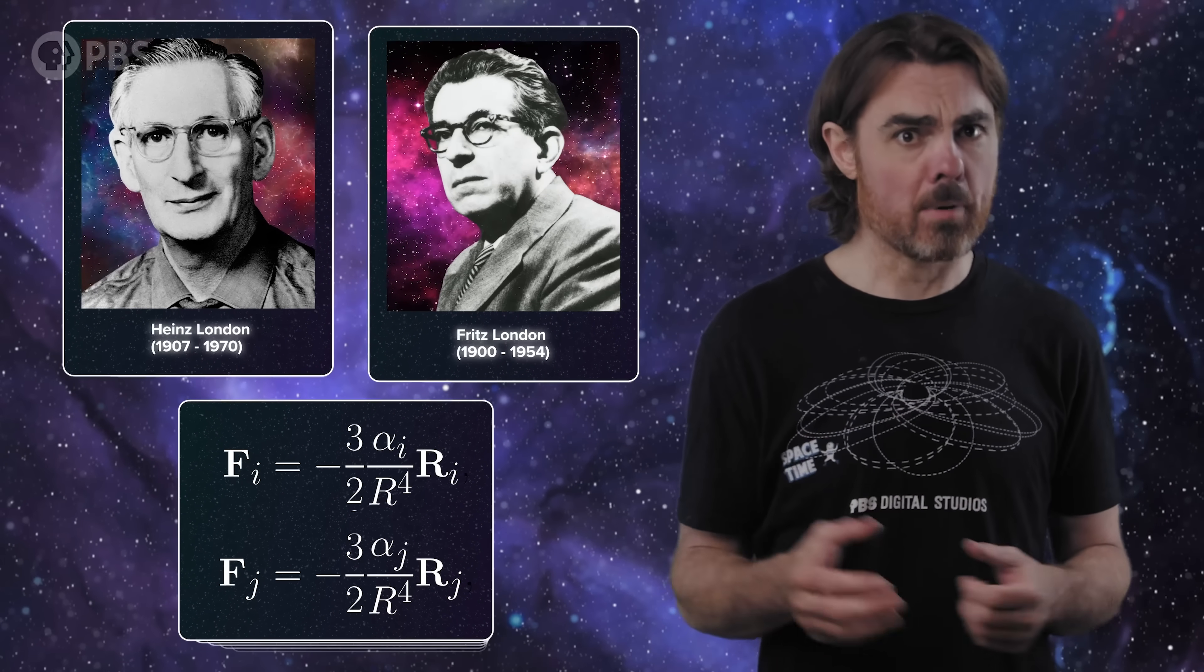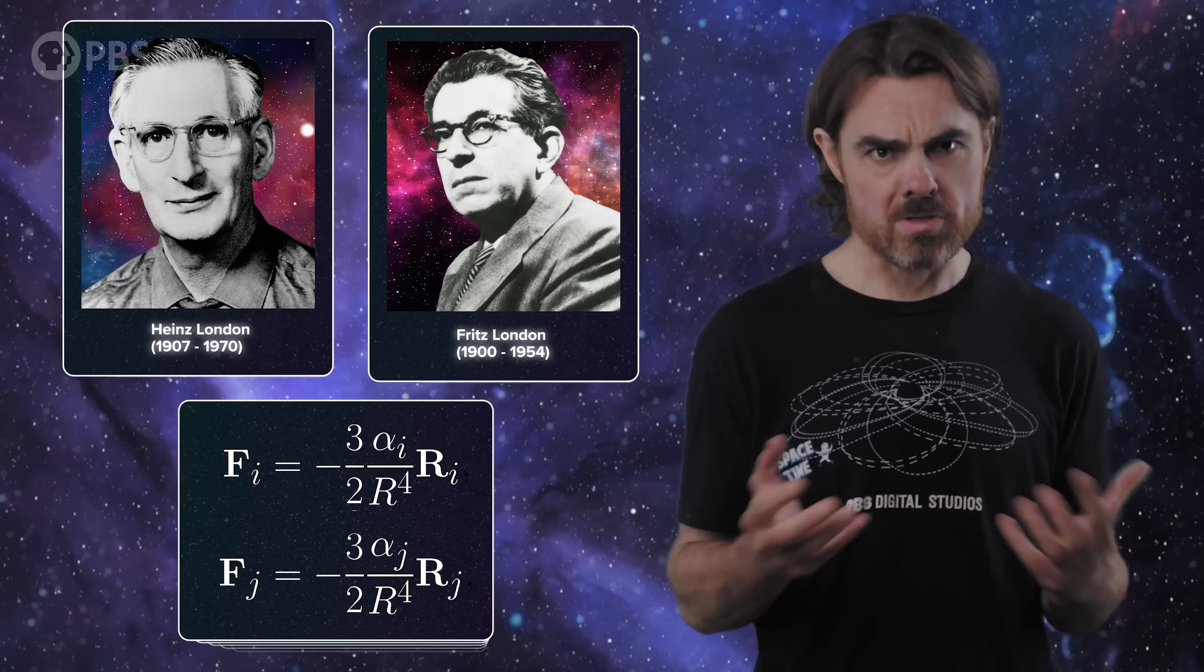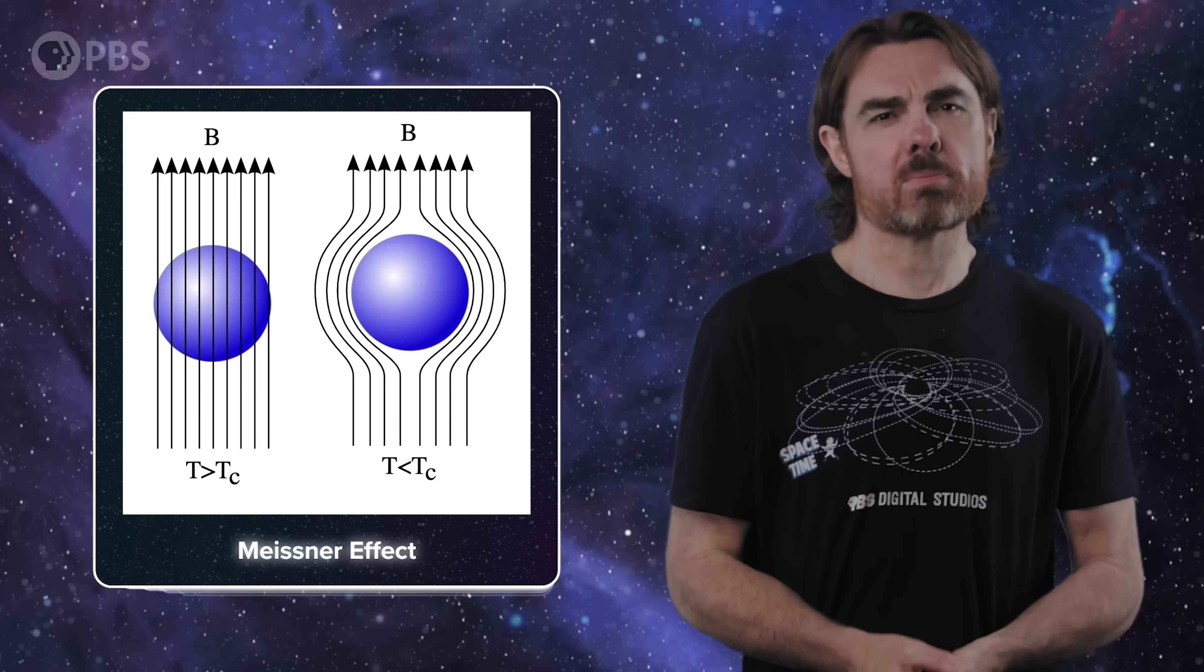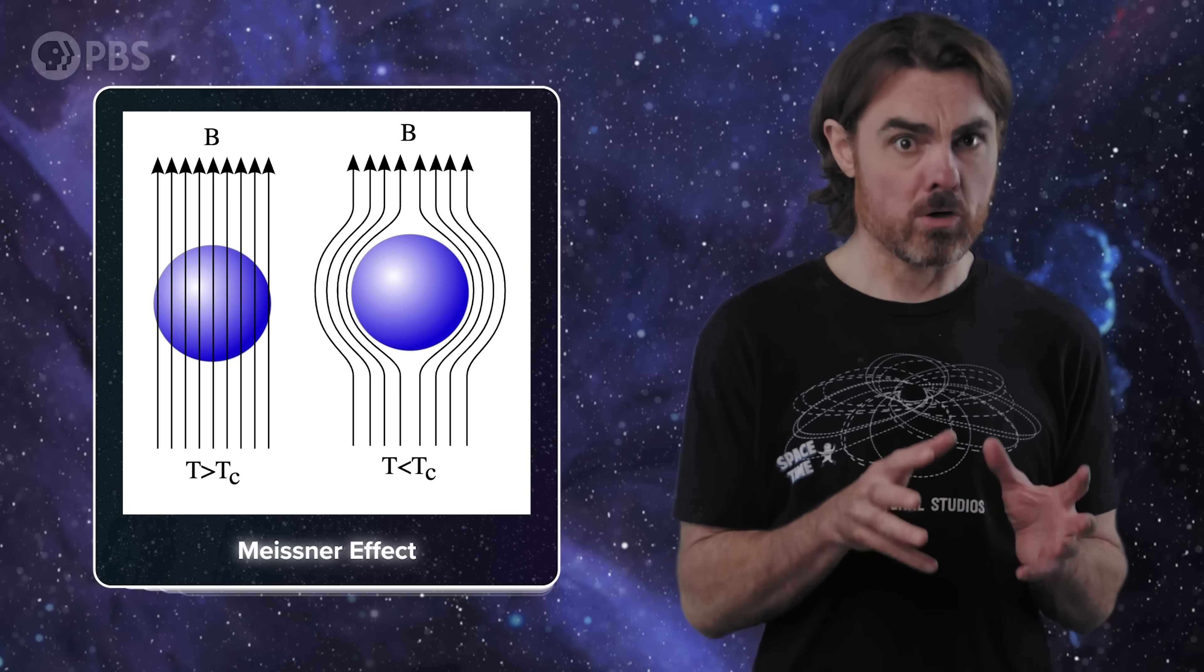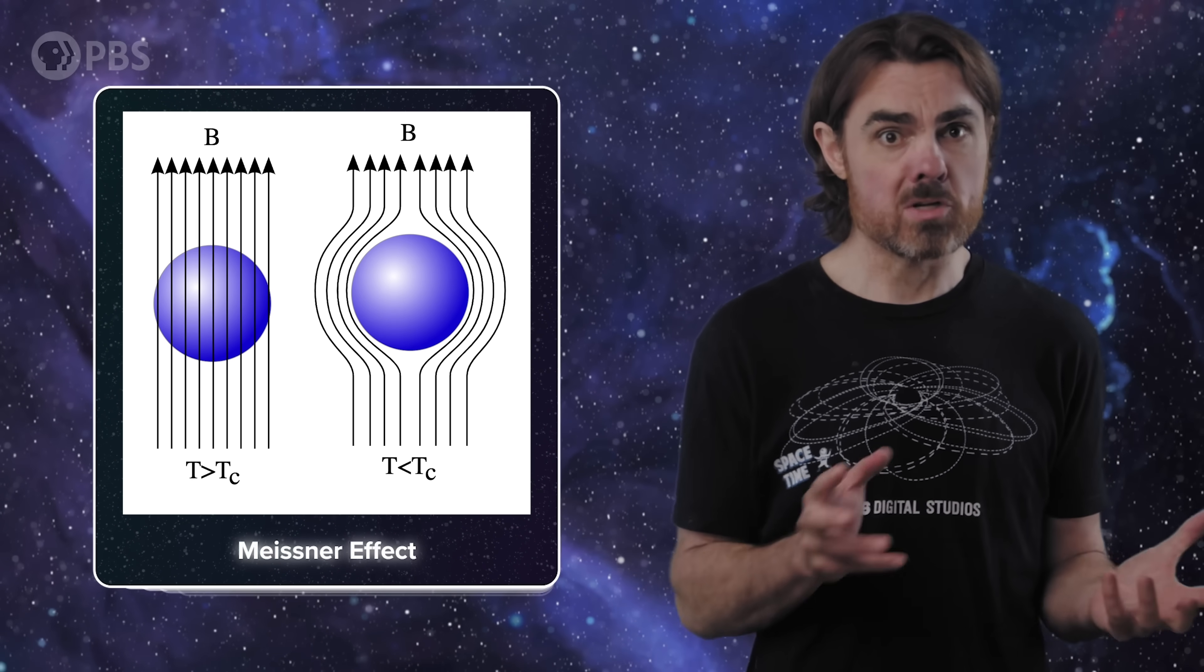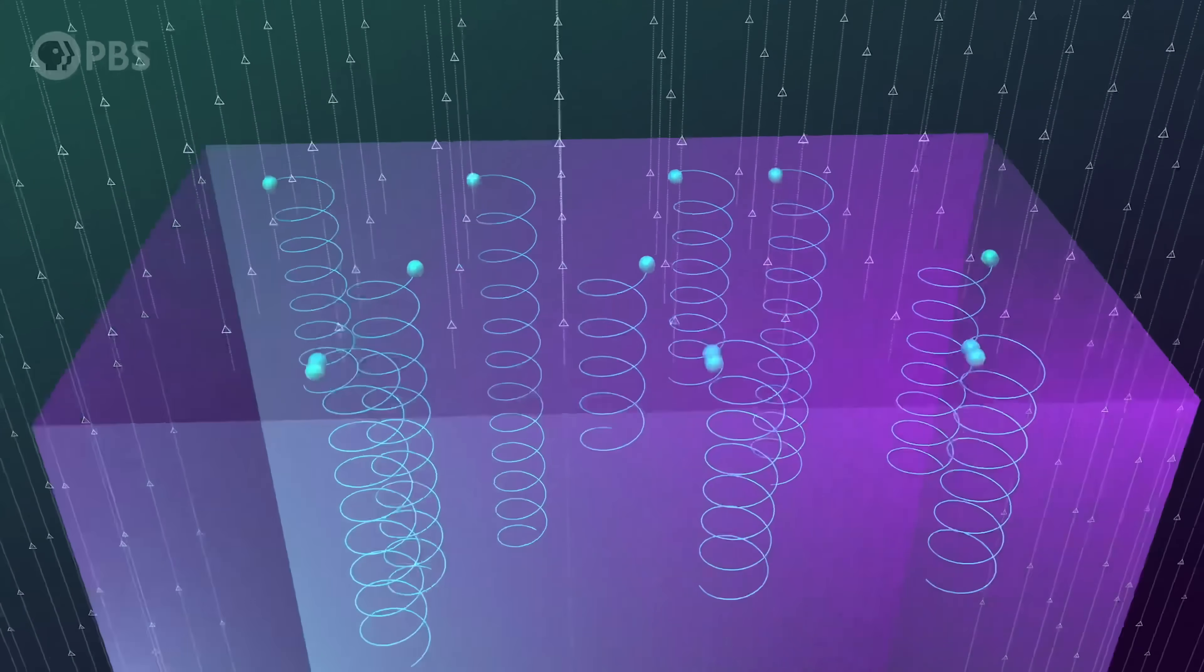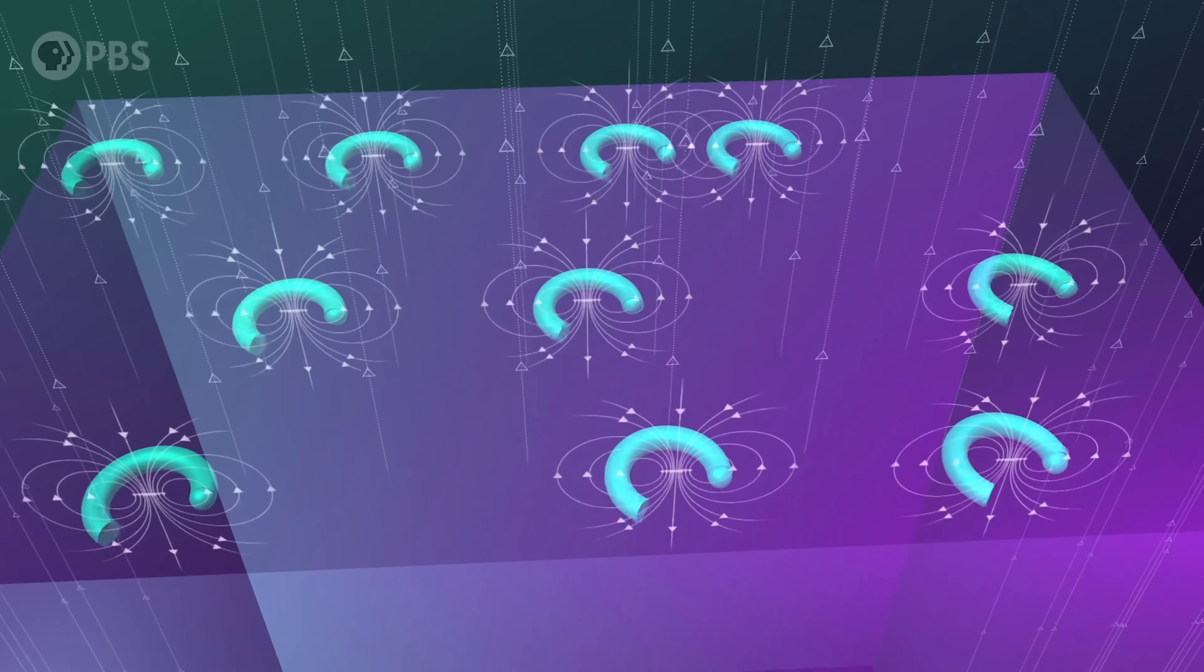This effect is nicely described by the London equations, figured out by the German brothers Fritz and Heinz London in 1935. They found that in a material with zero resistance, magnetic field had to exponentially decay inside it. These guys were able to explain the Meissner effect based on the assumption of perfect conductivity, without having any idea why superconductors have no resistance. One other subtle assumption in the London brothers theory is that the system should be in an equilibrium state. They figured out how things should look after the electrons finished rearranging themselves into whatever final configuration of currents and magnetic fields were induced. They took time out of the equation.